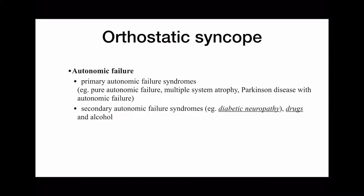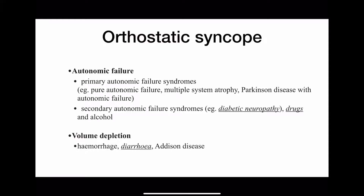Orthostatic syncope is caused by autonomic failure, which can be primary — including pure autonomic failure, multiple system atrophy, and Parkinson's disease with autonomic failure — or secondary, such as diabetic neuropathy, drugs, and alcohol. Always ask about past history of diabetes and antihypertensive medications. A second cause is volume depletion from hemorrhage, diarrhea, or Addison's disease, so look for signs of bleeding, diarrhea history, and dehydration on examination.